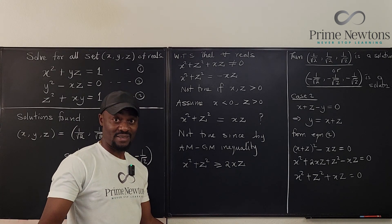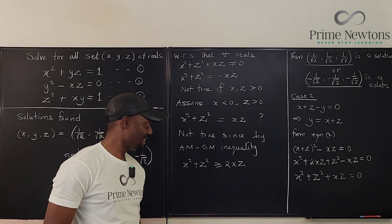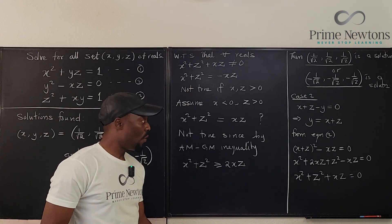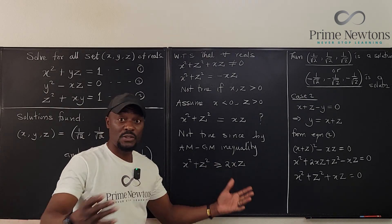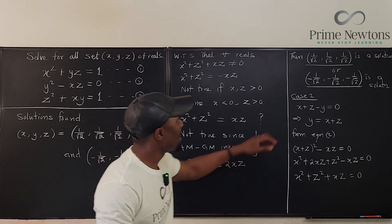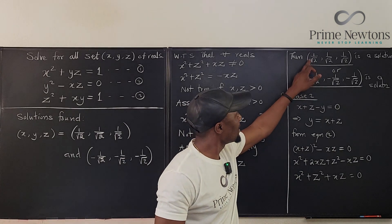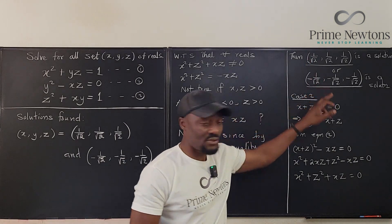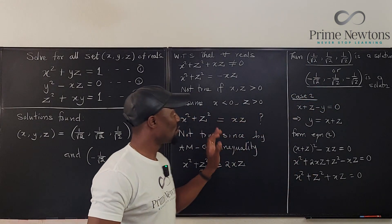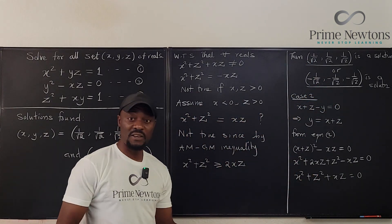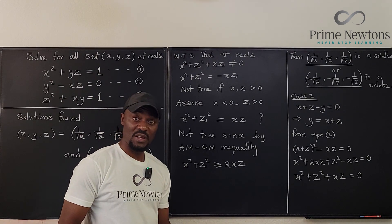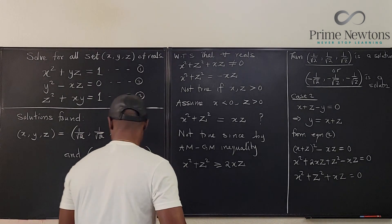So no other solutions can be obtained. The only real solutions to the system are the two triples we found: 1 over root 2, 1 over root 2, 1 over root 2, and negative 1 over root 2, negative 1 over root 2, negative 1 over root 2.